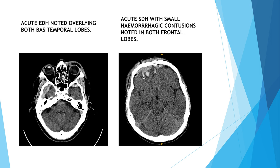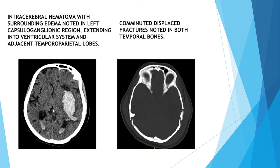These are some of the images from my study. The first image shows acute EDH noted overlying both basitemporal lobes. The second image shows acute SDH with small hemorrhagic contusions noted in both frontal lobes. Another image shows intracerebral hematoma with surrounding edema noted in the left capsuloganglionic region, extending into the ventricular system and adjacent temporoparietal lobes. The second image shows comminuted displaced fractures in both the temporal lobes.